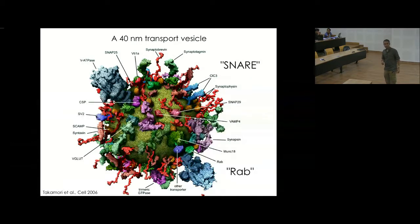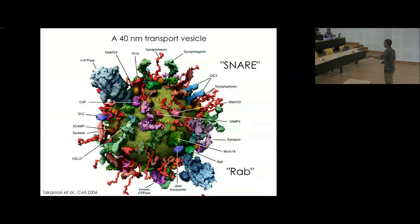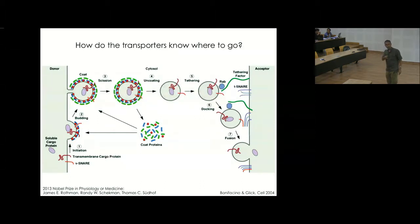These molecules have important functions. In particular, things called SNAREs — like synaptobrevins — and RABs are very important because they decorate the surface of different vesicles. Different vesicles have different types of RABs and SNAREs, and these act like an addressing system telling the vesicle where it should go.